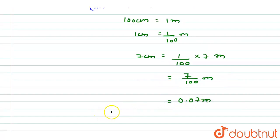The final answer for this question is 9 m plus 0.07 m is equal to 9.07 m.